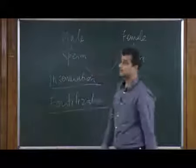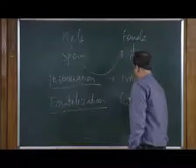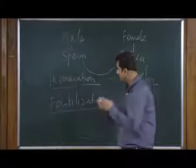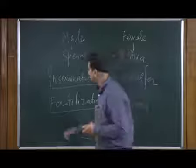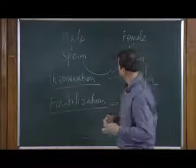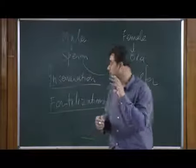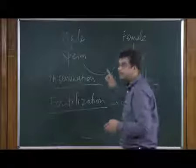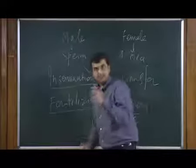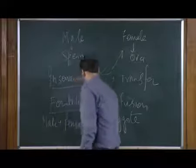The sperm gets transferred into the female reproductive system and the sperm and ova get fused. The process of fusion is called fertilization. Now the male and the female gametes — the sperm and ova — get mixed and fused, and this process is called fertilization. After fertilization, earlier there were two cells: a sperm as a single cell and an ova as a single cell. These two cells get mixed and form a single cell. That single cell formed after the fusion of male and female gametes is called the zygote.